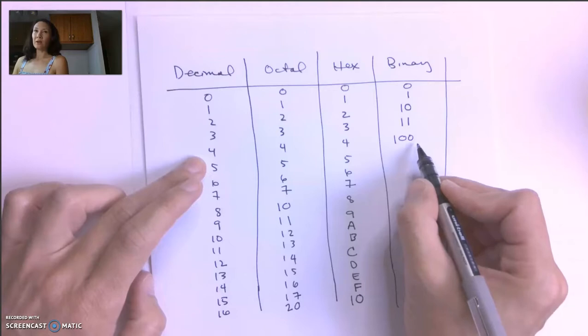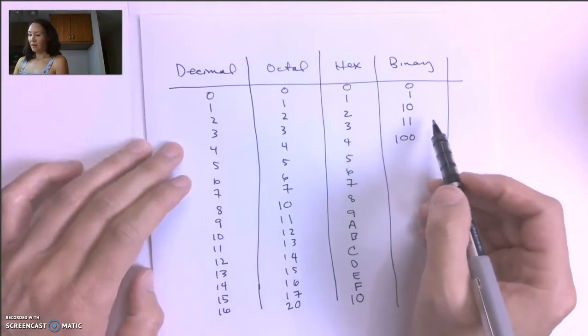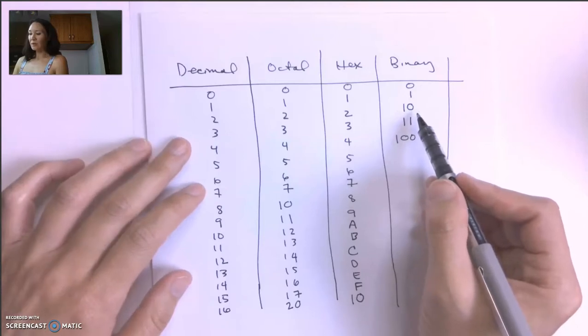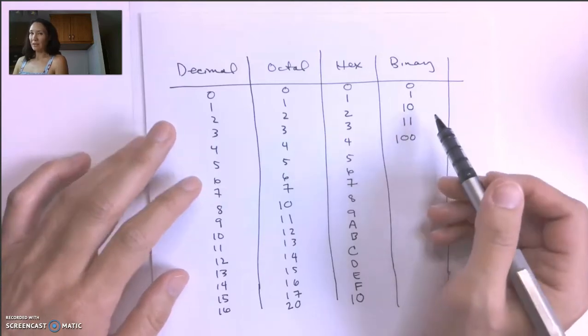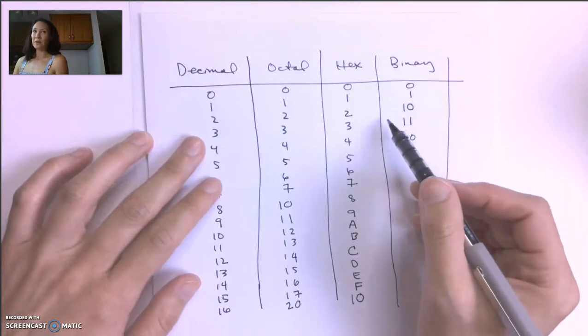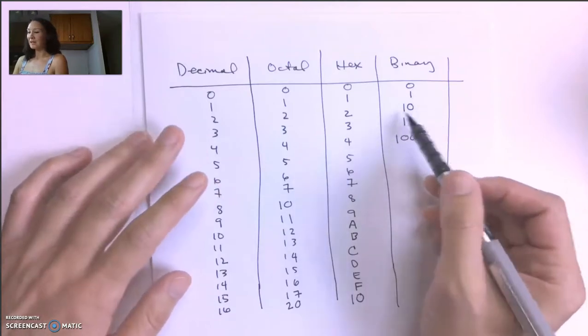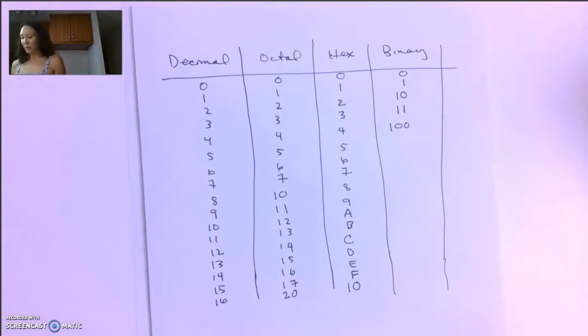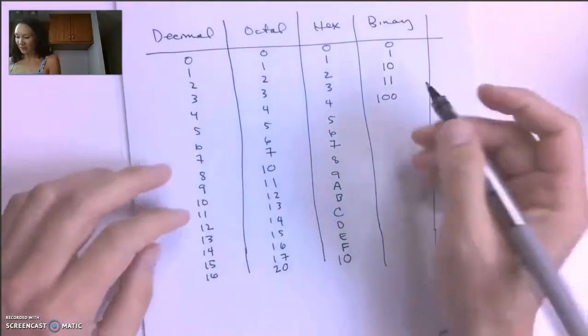You guys might have seen a nerdy bumper sticker. It says there are 10 people in the world, people that understand binary, and people that don't, right? So you know that actually this is 2 and not 10. But people that have no concept of that are going to think that that's decimal 10. So now you're privy to that bumper sticker. Next time you see it, you can chuckle.